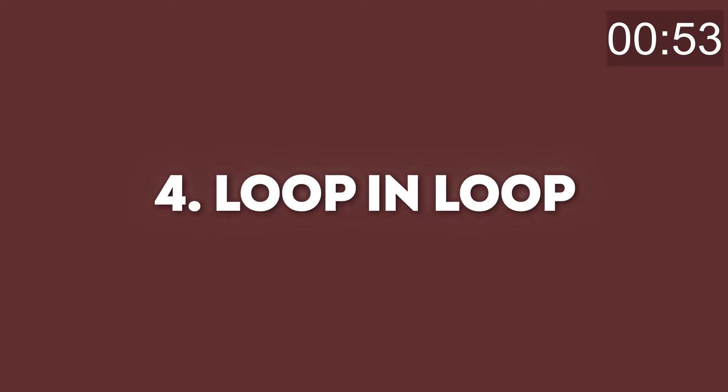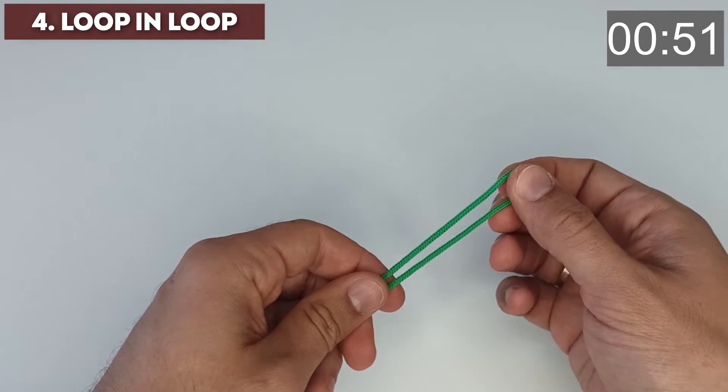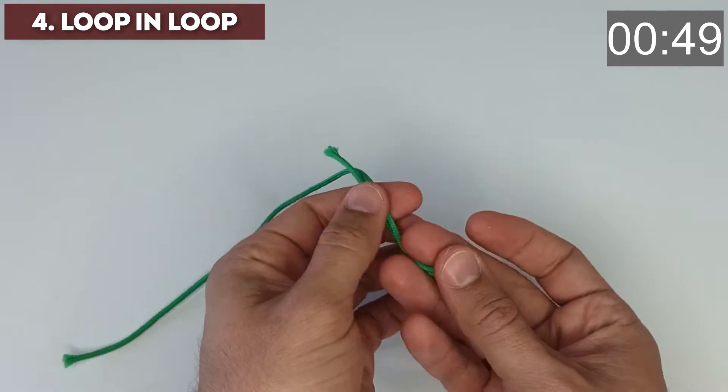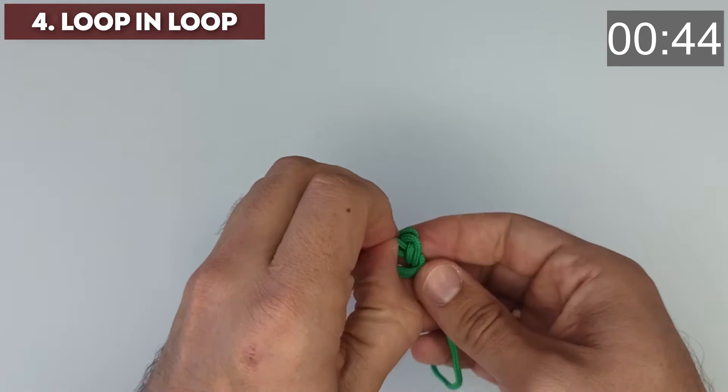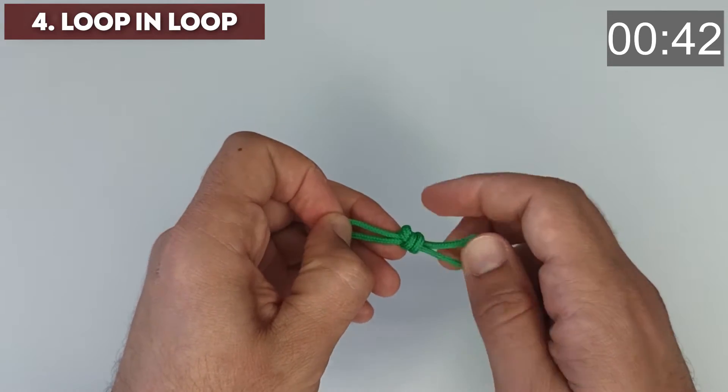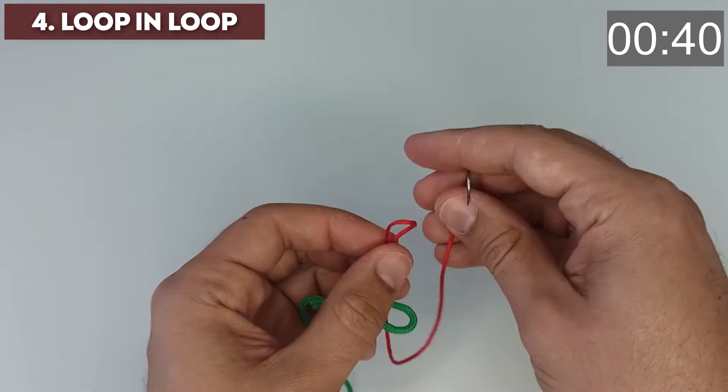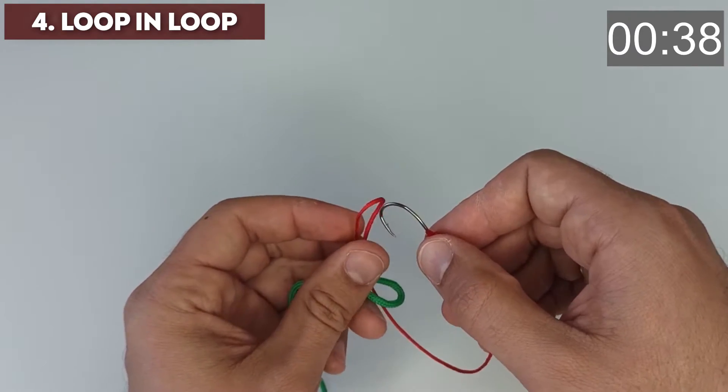Loop in loop to connect the tackle. Tie a regular loop on both lines. The size of the loops on the fishing line with the tackle should allow the tackle through it.